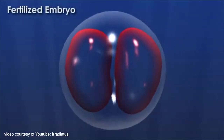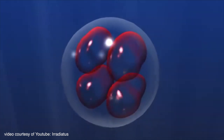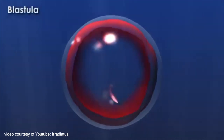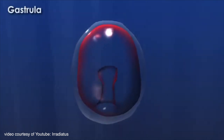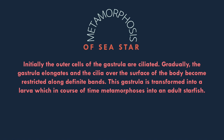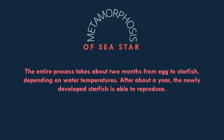Most species of starfish shed their eggs and sperm freely into the water for external fertilization. The fertilized eggs undergo total cleavage and through the blastula stage reach an oval gastrula stage. Initially, the outer cells of the gastrula are ciliated. Gradually, the gastrula elongates and the cilia over the surface of the body become restricted along definite bands. This gastrula is transformed into a larva which, in course of time, metamorphoses into an adult starfish. The entire process takes about two months from egg to juvenile starfish, depending on water temperatures.